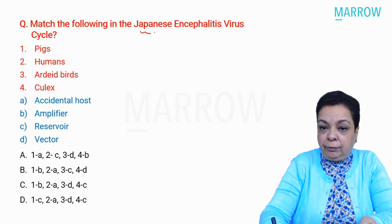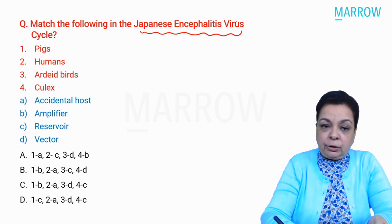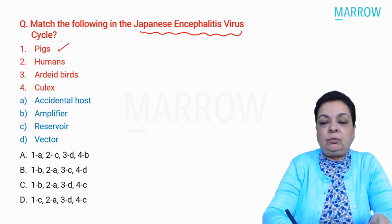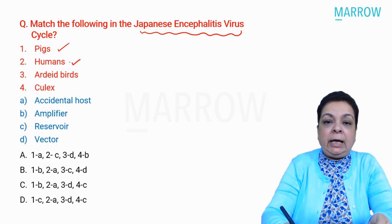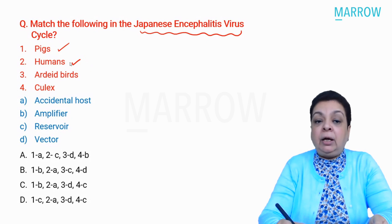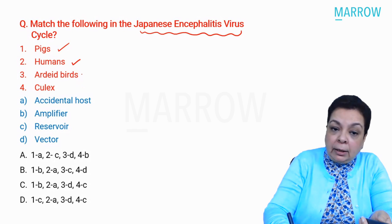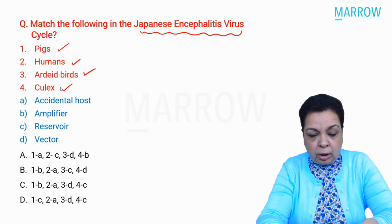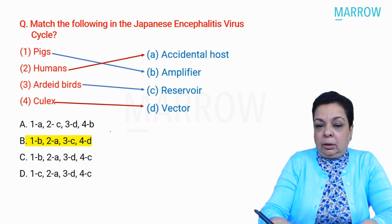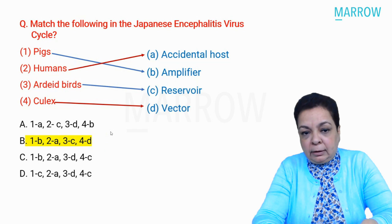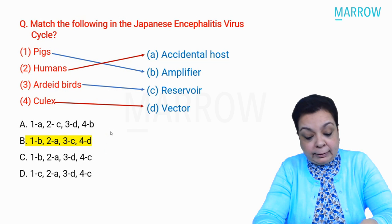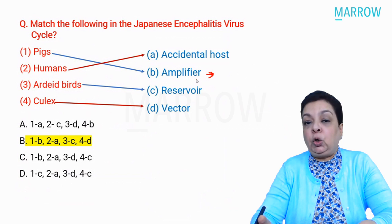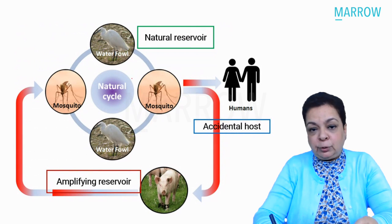Next: match the following in the Japanese encephalitis virus transmission cycle. Pigs are the amplifier hosts (showing many-fold viral replication). Humans are accidental or dead-end hosts. Ardeid birds (water birds) are the natural reservoirs. Culex is the vector. This was simple to answer.